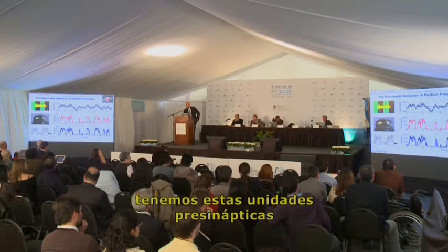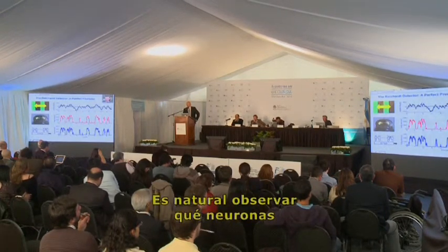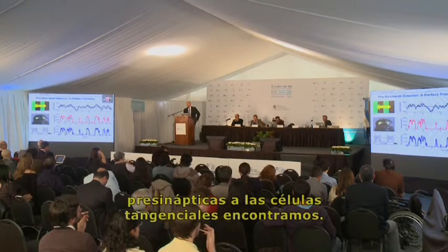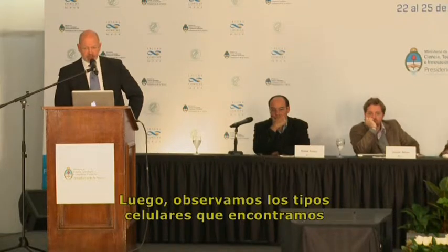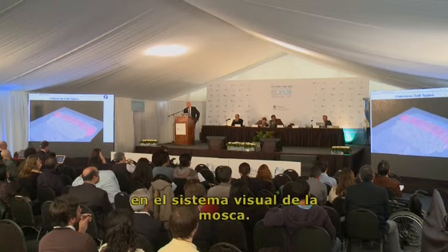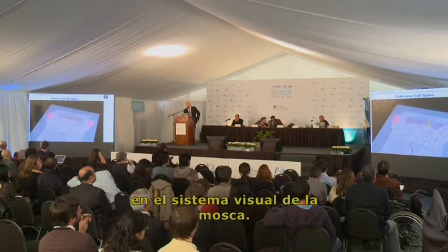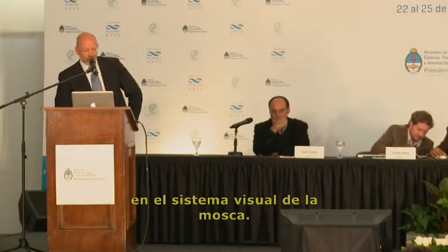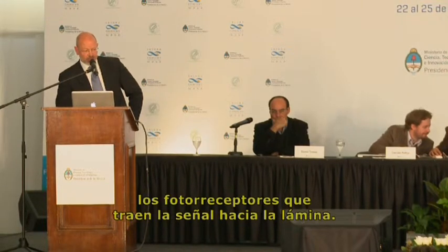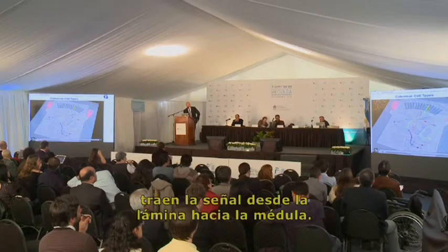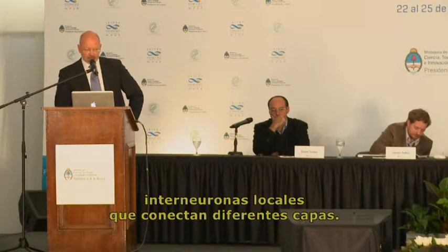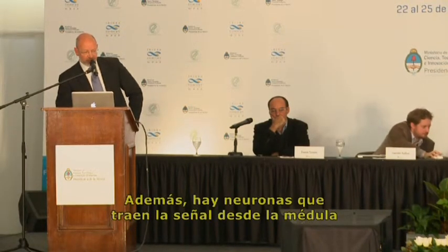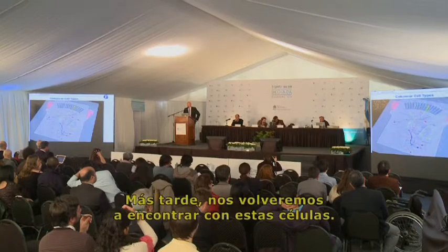Clearly there are Reichardt detector units presynaptic to the tangential cells, and it is natural to ask what neurons we find presynaptic to them. We cut a slice through the optic lobe and take a horizontal section to look at the various cell types in the fly visual system. There are photoreceptors bringing the signal into the lamina, lamina neurons bringing the signal into the medulla, local interneurons connecting different medulla layers, and then neurons bringing the signal from the medulla into the lobula and the lobula plate. We will meet these cell types again later.